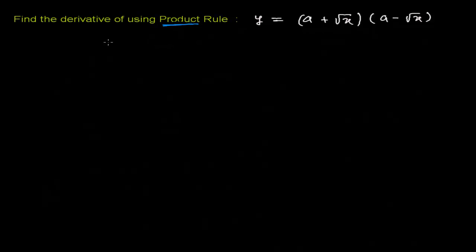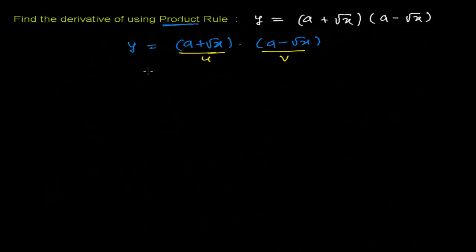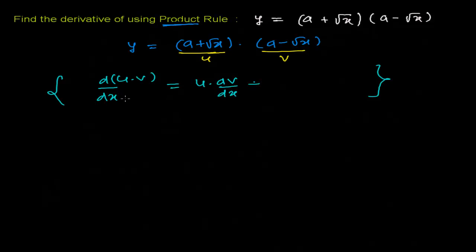Let's do it. I'm first going to write my function here. My function is (a + √x) times (a − √x). As per our rule, I'm going to suppose this is my first function u and this is my second function v. Now, to use the product rule, first I'm going to write the product rule here. If two functions are in product form, the derivative is: first function times derivative of the second, plus second function times derivative of the first. That's simple.